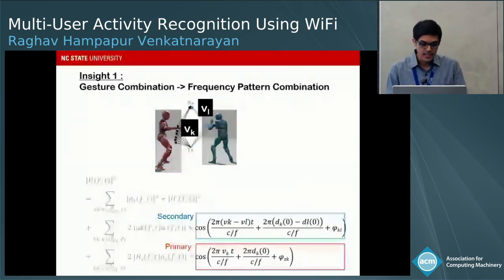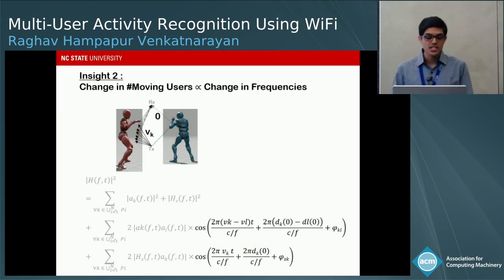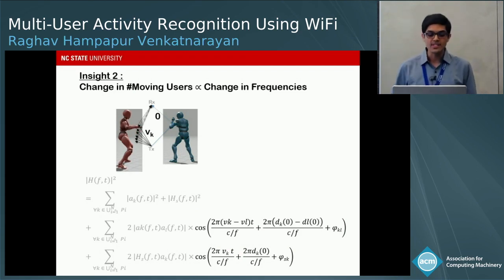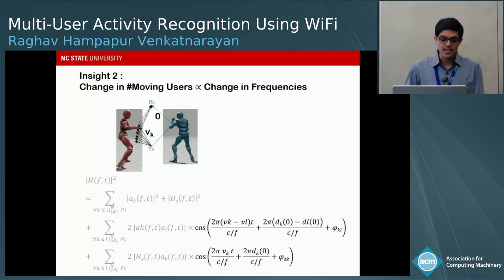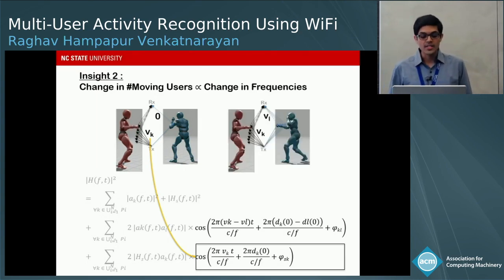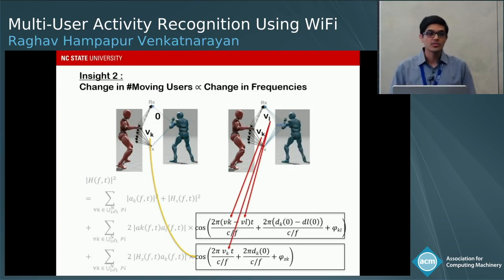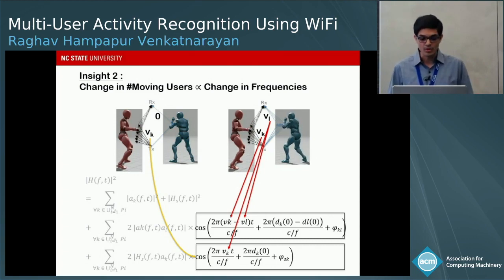The second insight is that any change in the number of moving users manifests as a change in the number of frequencies. For example, if only the left user is moving, we have one sinusoid. But when the second user starts moving, one secondary frequency and one additional primary frequency are added to the CFR power. Therefore, any change in the number of moving users manifests as a change in the number of frequencies.